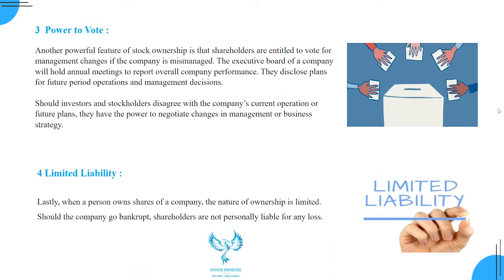Dividends and capital gains are direct benefits for us. Next is power to vote — we don't actively participate but we have the power to vote in electing the board of directors and those things. Usually a common man does not have a big role in this. Limited liability is a very big plus point. Assume you want to start a company like TCS — do you think that is possible? Do you want to start a company like HCL Tech, Vedanta, or Tata Motors? No, right? Whatever funds you may have, it is not sufficient.